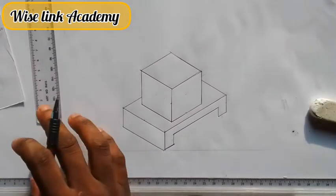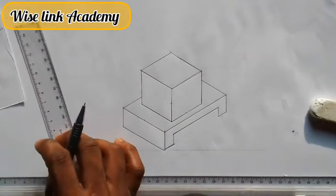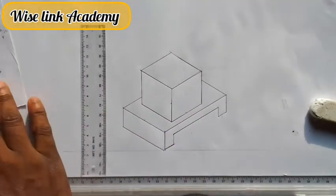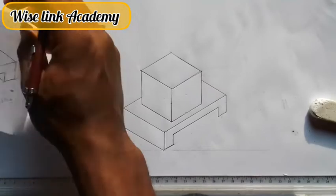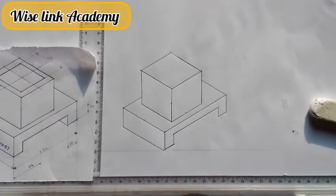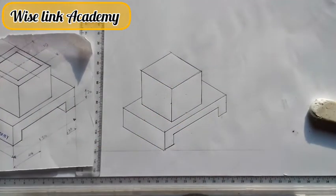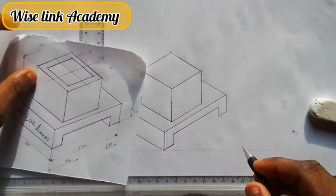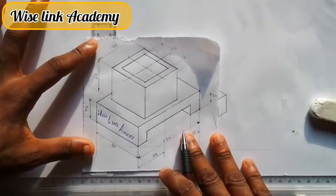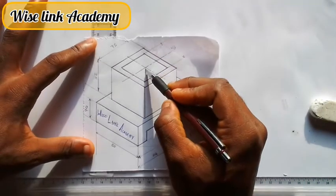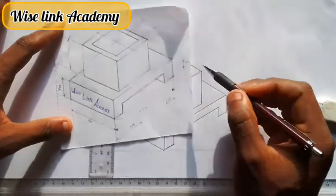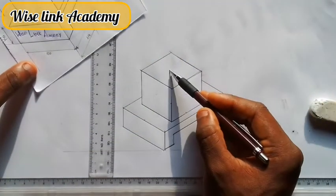So if I do that, you will be having this. After deleting those hidden lines, I have this figure here. My next step is, as you can see from the given diagram, there is an inner square here. I need to get the inner square.